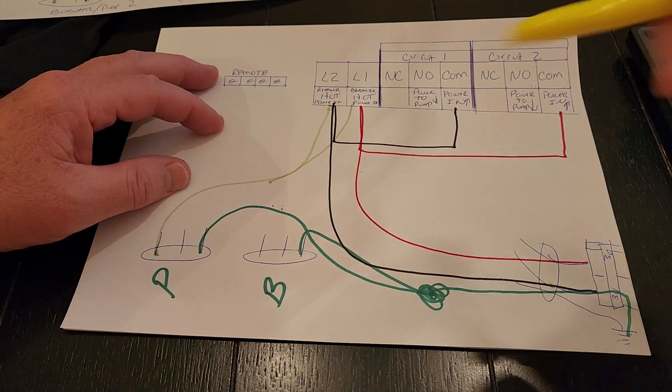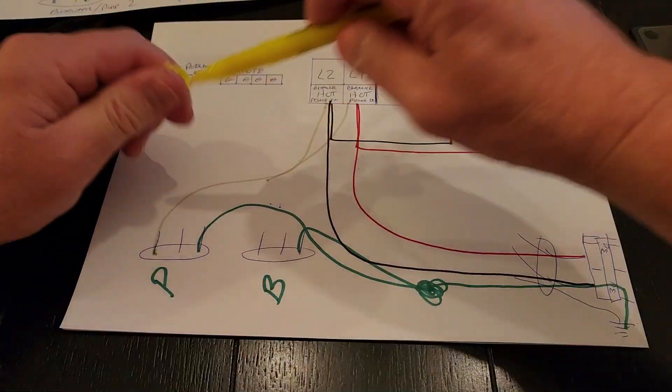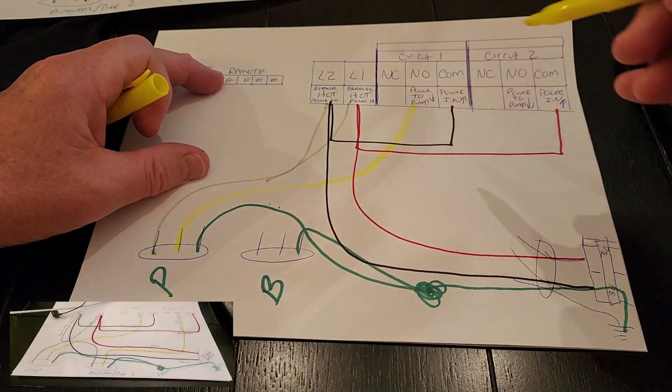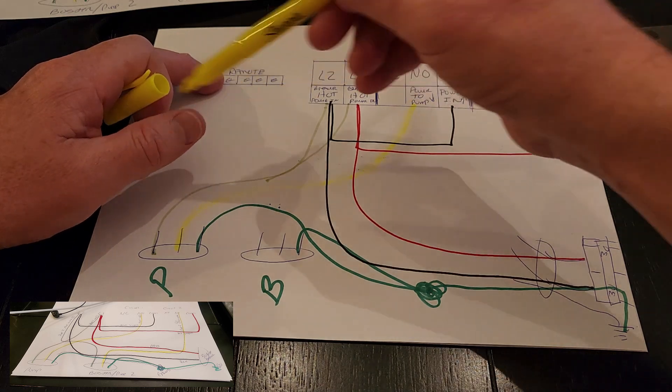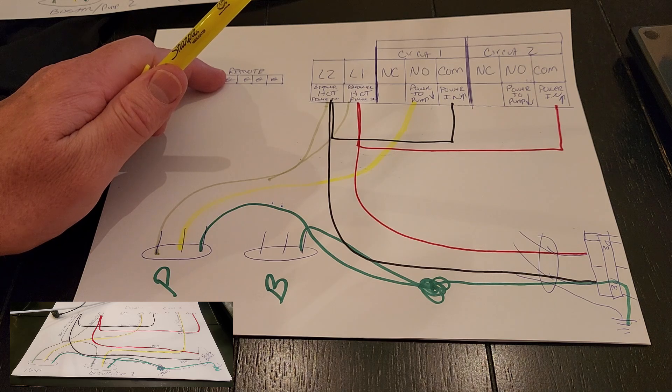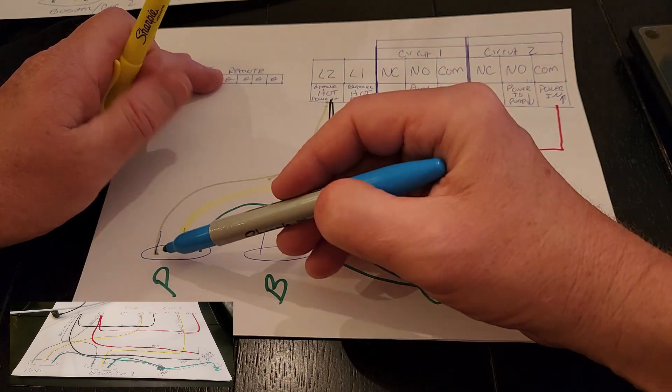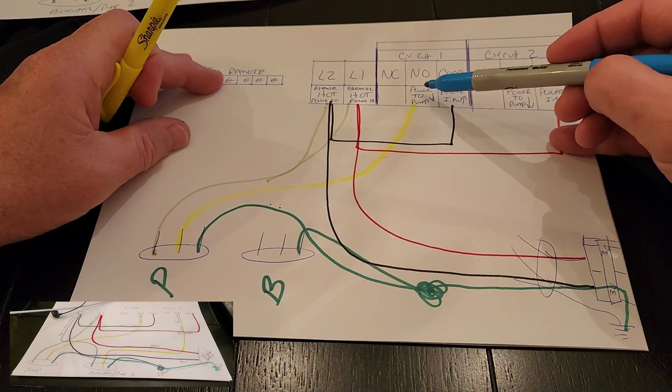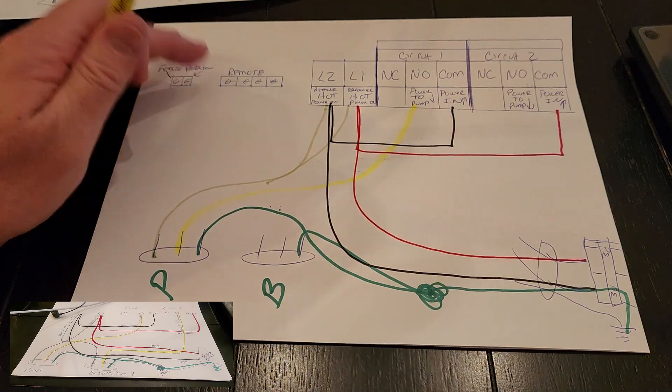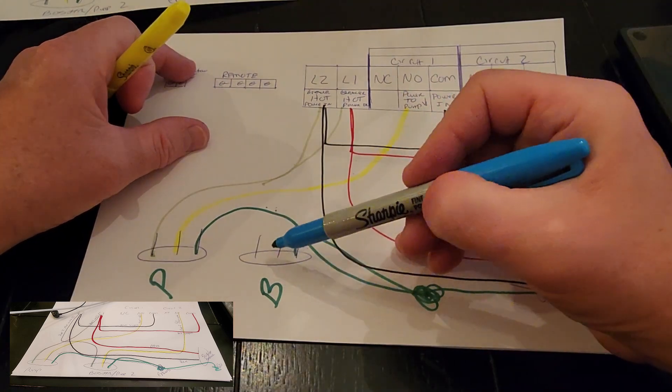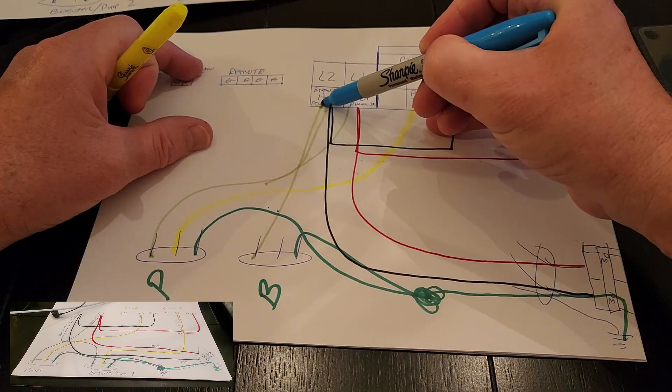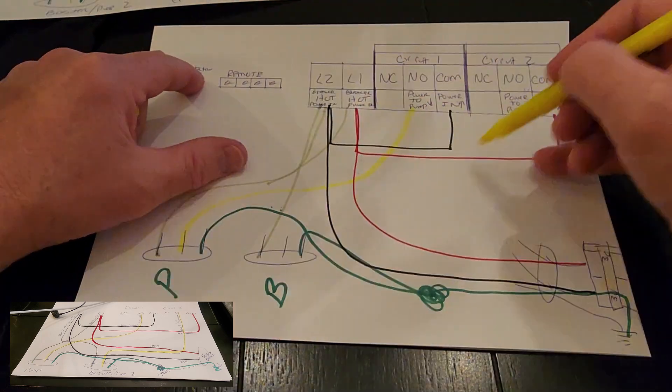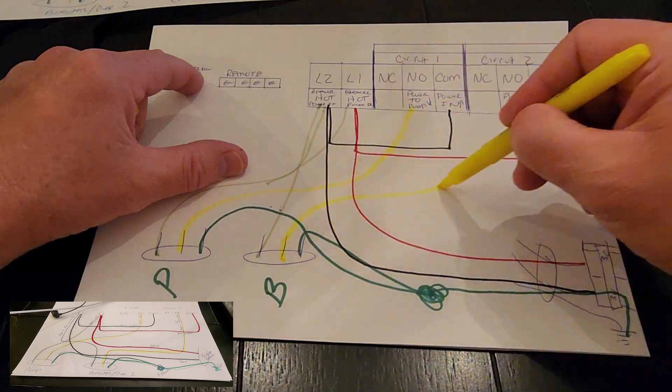And then we take, I hope this doesn't confuse you too much. So pool pump breaker goes into L1. Out power for circuit two goes into the other side of the main pool pump. So I'll give you a picture of the other schematic I drew because it's better, down below. So main pool pump goes into L1. Other side of the pool pump goes into circuit one. One wire of the other pump goes into L2. And the other wire of the other pump goes into circuit two. Normally open.